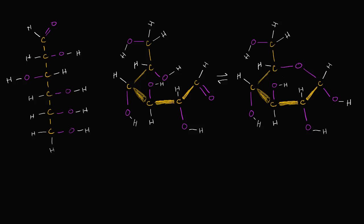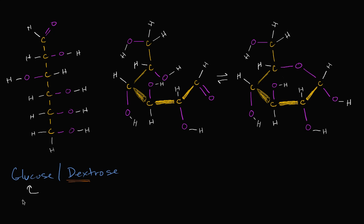What I want to do in this video is familiarize ourselves with one of the most important molecules in biology, and that is glucose, sometimes referred to as dextrose. The term dextrose comes from the fact that the form of glucose typically found in nature, if you form a solution of it, it's going to polarize light to the right, and dexter in Greek means right. The more typical term glucose literally means sweet in Greek.